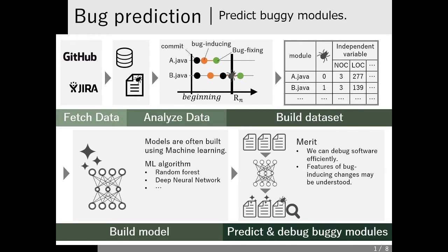First of all, what is bug prediction? It is a technique to predict buggy modules in a software system. In general, bug prediction proceeds as follows. First, we select the target project we want to predict buggy modules in.